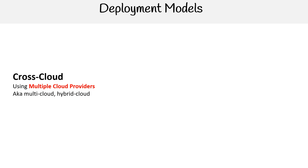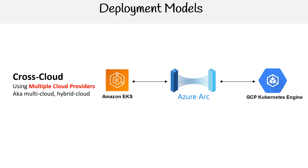One more deployment model I want to briefly touch on is cross-cloud. This isn't listed on the actual exam, but it's something you should understand. Cross-cloud is when you're using multiple cloud providers — some people refer to this as multi-cloud or hybrid cloud. There's a service called Azure Arc, and what Azure Arc does is extend your control plane so you can run Kubernetes containers on different platforms — such as AWS with EKS and GCP's Kubernetes engine — all treated like they're on the same network. Cross-cloud is becoming very popular with extremely large organizations that have very unique requirements.